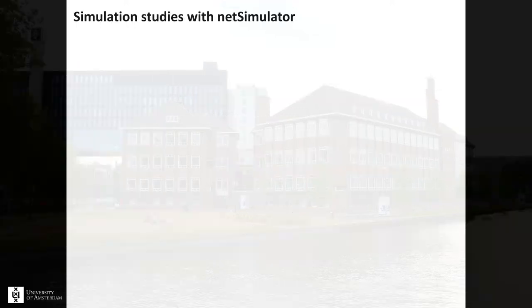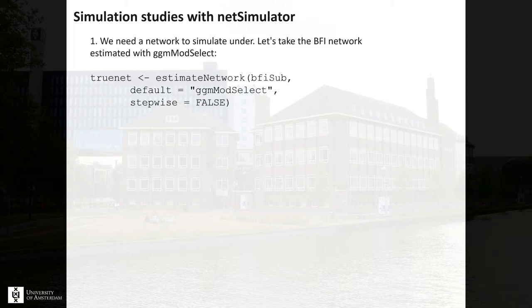Let's look at how you can run a simulation study using net simulator. The first thing we need is a network to simulate data under. We can use another estimated network — here I just get a network using the GDM select to get something to simulate data under. We can also construct an artificial network using the gen GDM function in bootnet, which has methods built in for generating artificial network structures.